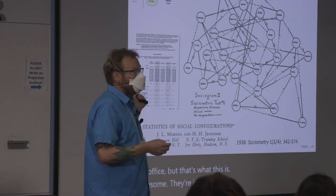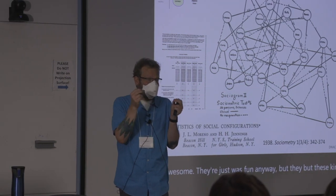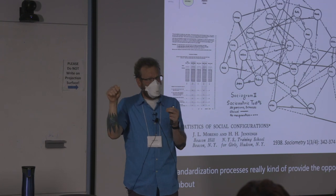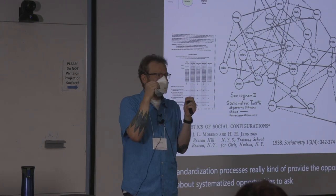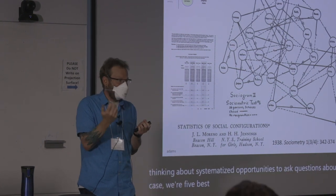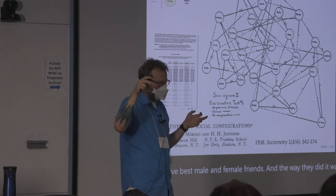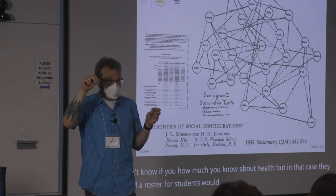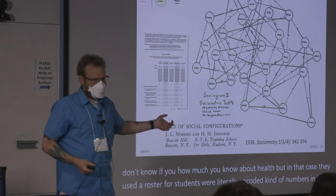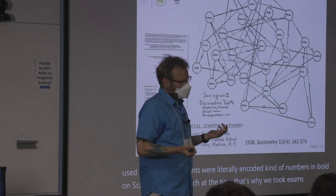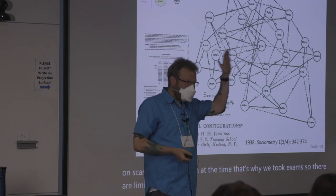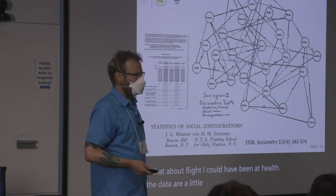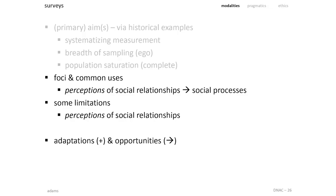These survey standardization processes really provide the opportunity for systematized questions about — in Add Health's case — who are your best male and female friends. The way they did it was using a roster where students were literally encoding numbers in bubbles on Scantron sheets, which at the time was how we took exams. There are limits to Add Health; the data are a little old and we're talking about complete networks at that point, but for what it's worth.